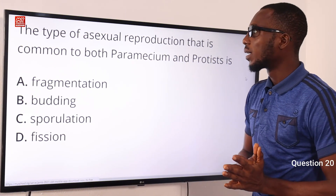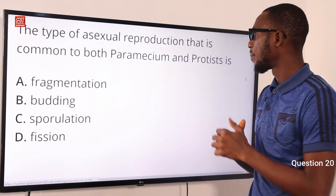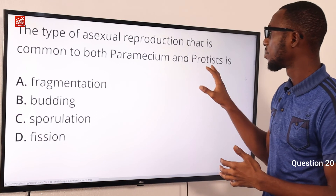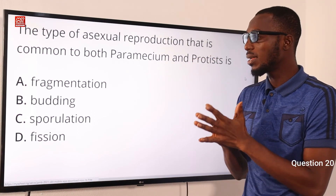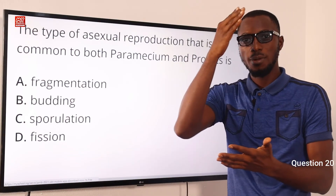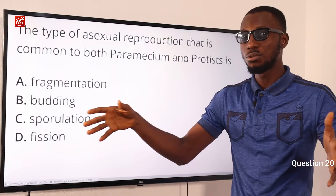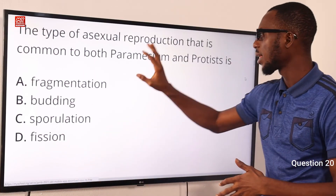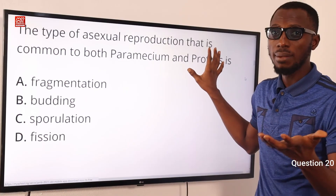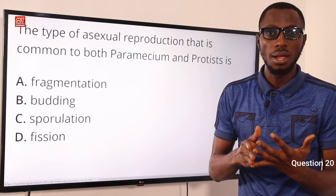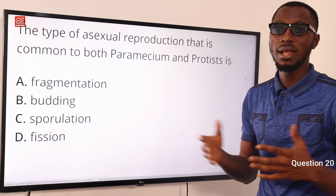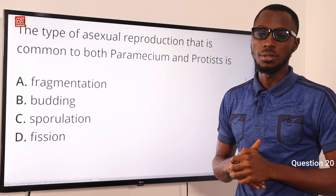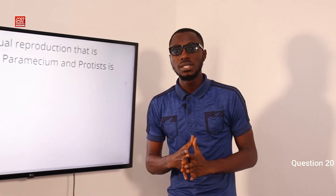Question 20: The type of asexual reproduction common to both Paramecium and Protists (such as Amoeba) is binary fission. Fission means splitting into two. Both Paramecium and Amoeba are eukaryotes, they both live in water, and they share similar characteristics. The correct option is D: binary fission.